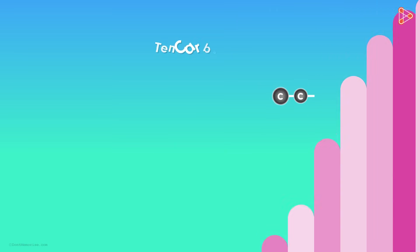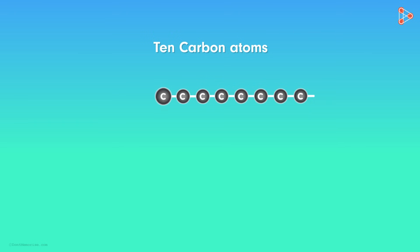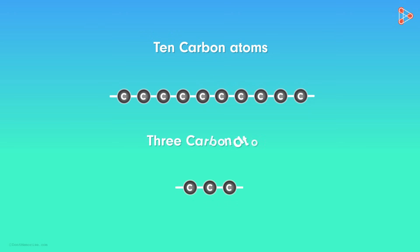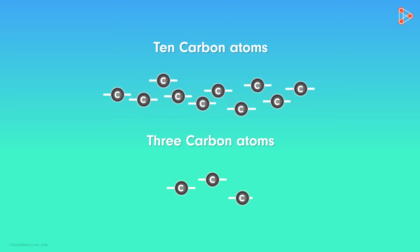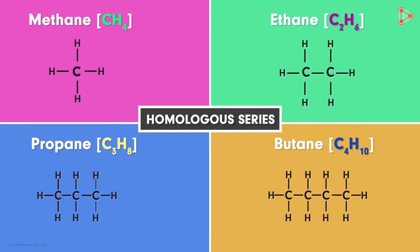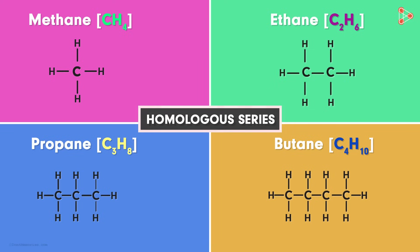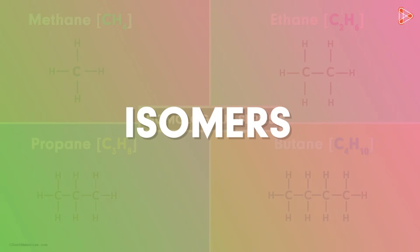For example, a compound with 10 carbon atoms will have a higher boiling point compared to a compound with 3 carbon atoms, because the energy required to break the bonds will be greater. This is how compounds in the homologous series slightly differ from each other in spite of being in a sequence. This was about the concept of homologous series in carbon compounds. Let's talk about another interesting concept — isomers — in the next video.